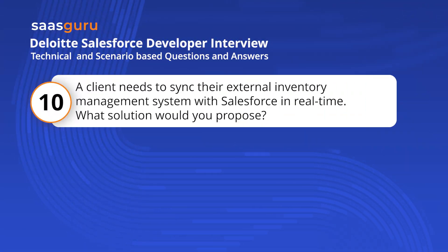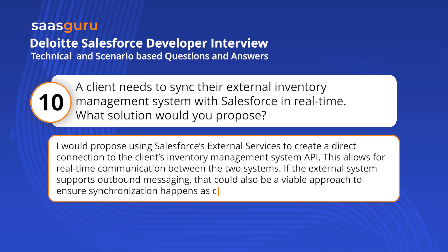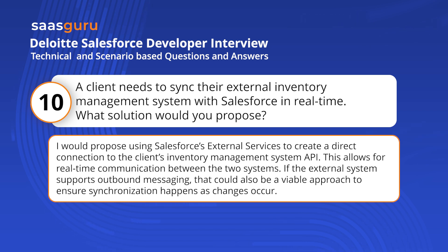A client needs to sync their external inventory management system with Salesforce in real-time. What solution would you propose? I would propose using Salesforce's external services to create a direct connection to the client's inventory management system API, allowing for real-time communication between the two systems. If the external system supports outbound messaging, that could also be a viable approach to ensure synchronization happens as changes occur.